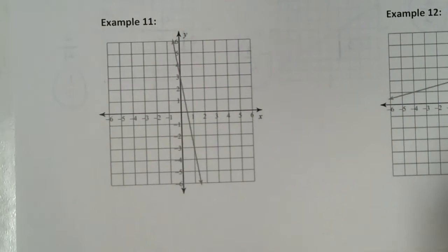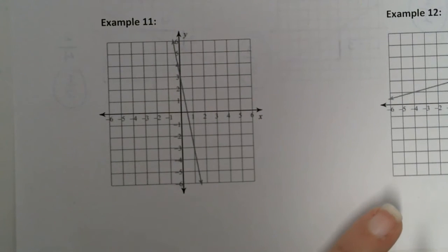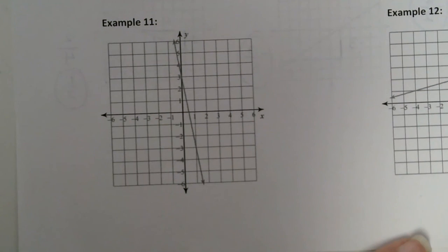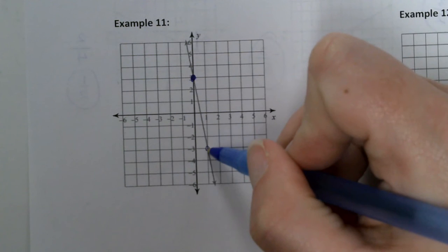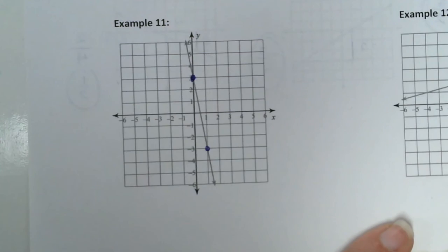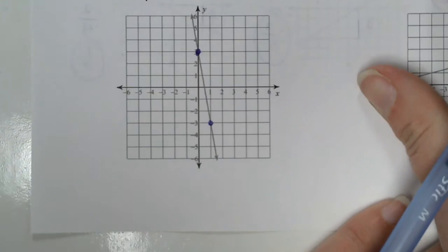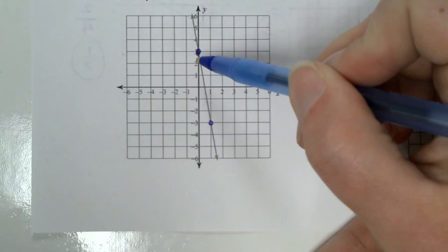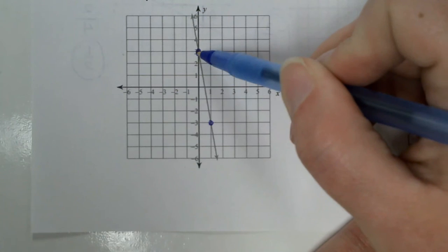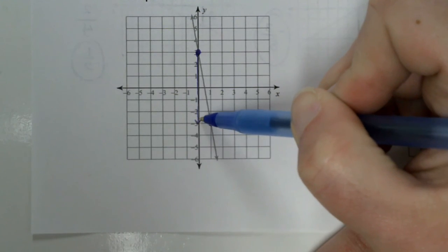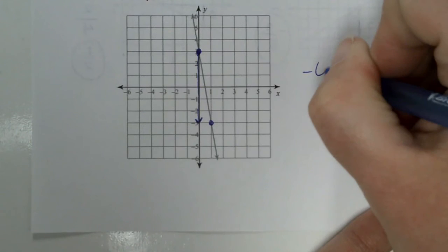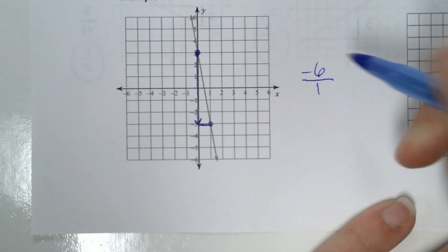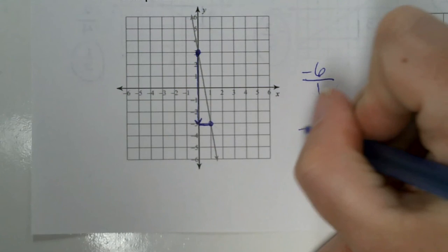Example eleven — a student used zero three and then one negative three. On this one, I think those are the only points you could have used — there aren't any other points on here that I can find. Did you start up here? How much did you rise? Since you went down, did you use negative six? So negative six is my rise. How far did you run? One, just one. And if you type this into the calculator, what do you get? Negative six is your answer. Sometimes your answer is going to be a whole number — that's okay.